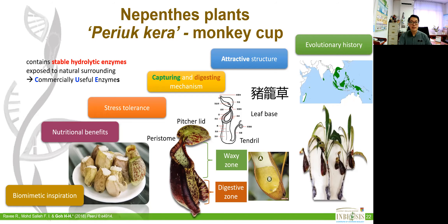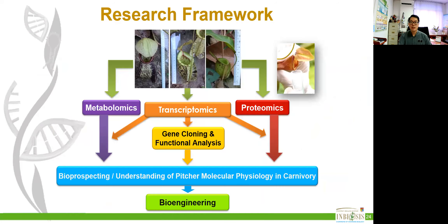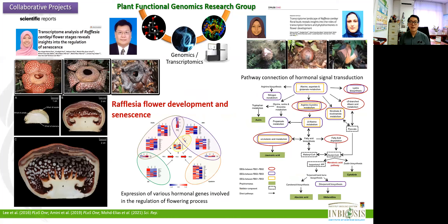This also helps us understand the regulation of protein secretion into the digestive fluid, filling in the gap of our understanding of the botanical carnivory mechanism on how insects are digested and absorbed in the pitcher fluid. We also attempted to illustrate the molecular mechanism of the development of the largest flower, Rafflesia.